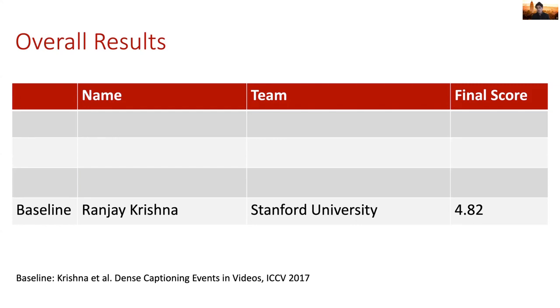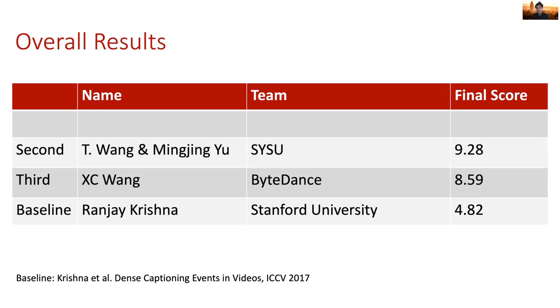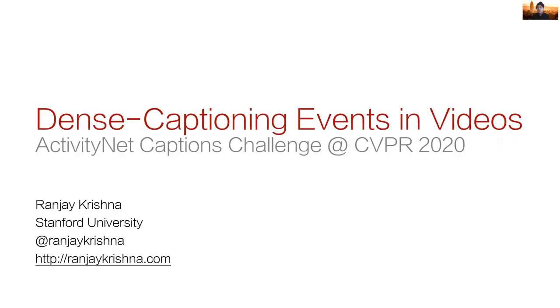Back when we released the model, our model performed at about a 4.82 average Meteor score, and this year the third place team called Bike Dance already doubles that score to 8.59. Our second place goes to a team from SYSU with a score of 9.28, and our winners are from Renmin University with a score of 9.89. Next, I will ask the winners of the challenge to speak to us about their model and how they went about designing the winning algorithm. After that, we'll be joined by the second place team who will also tell us about their model. Thank you everyone for joining us here at CVPR 2020, and I hope you enjoy this challenge.